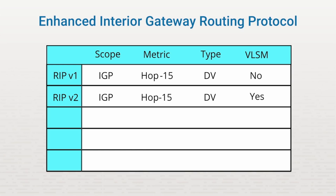The next routing protocol is Enhanced Interior Gateway Routing Protocol, or EIGRP. From its name, you can see that it's also an IGP. EIGRP uses bandwidth as its metric and estimates delays. It's classified as a Hybrid Routing Protocol since it's a Distance Vector Protocol that includes key improvements that can make it act like a link state protocol. EIGRP also supports VLSM.